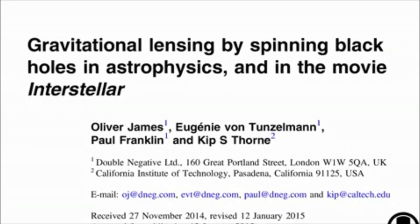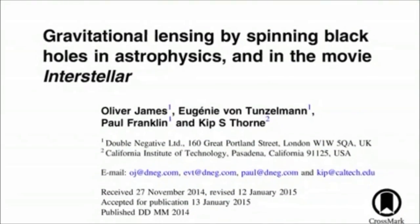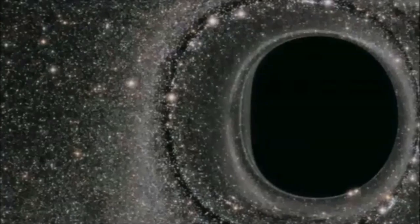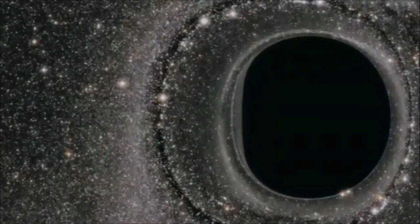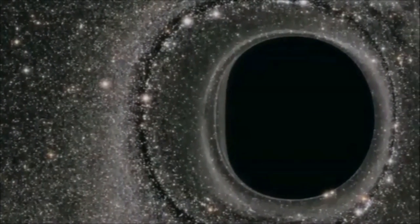Our paper, Gravitational Lensing by Spinning Black Holes in Astrophysics and in the movie Interstellar, describes this work in detail. The work may have other applications in astrophysics. Calculating the pulse profiles from spinning neutron stars has been suggested.